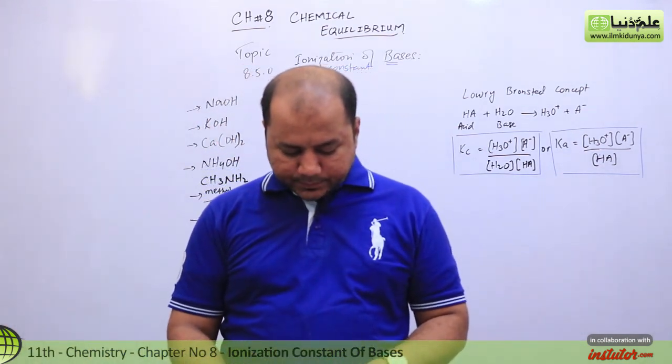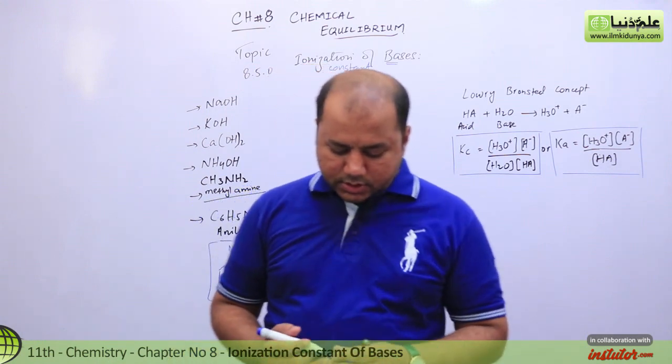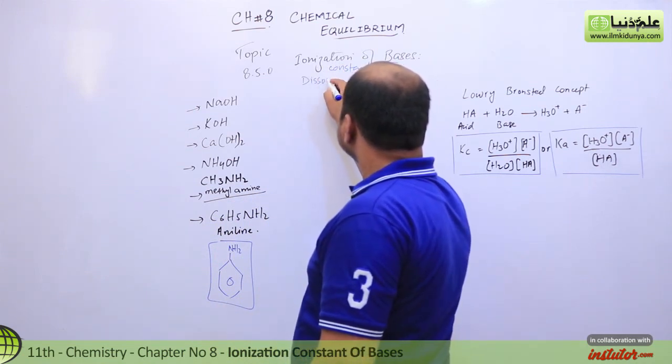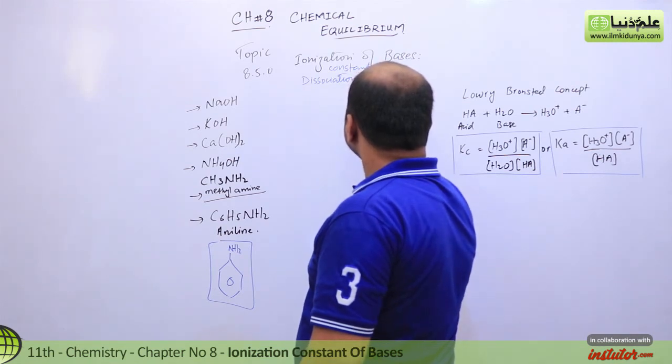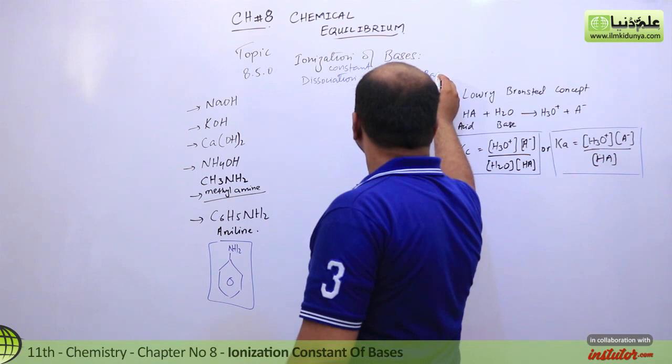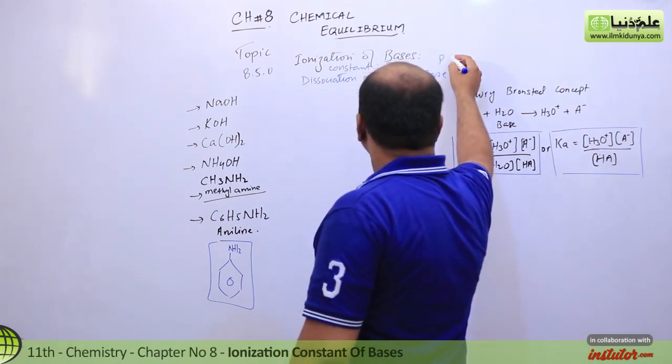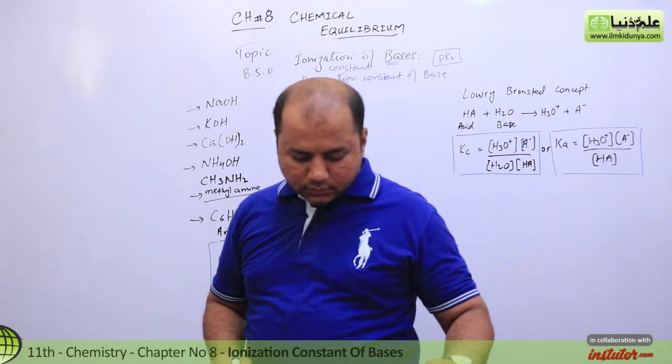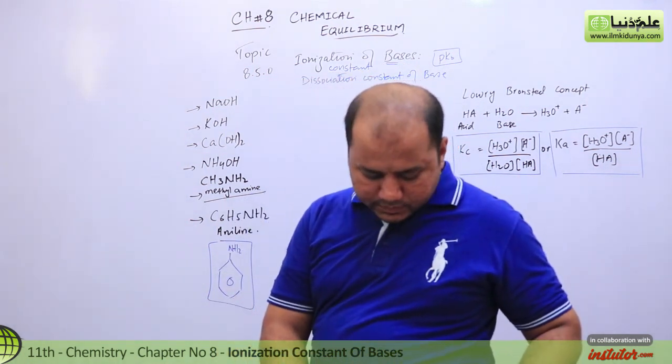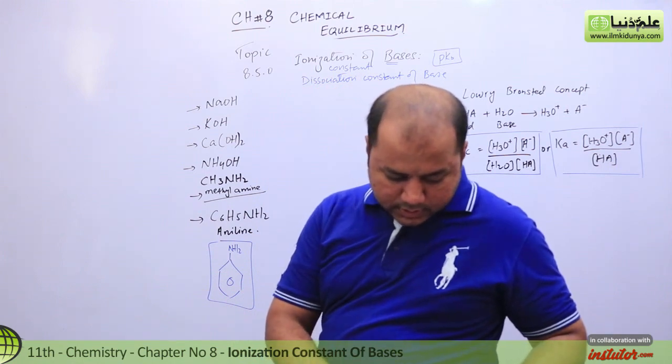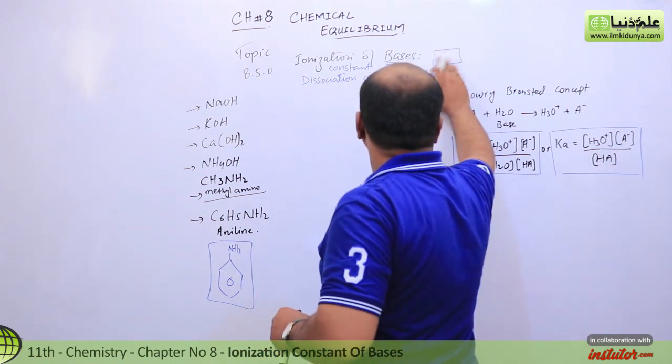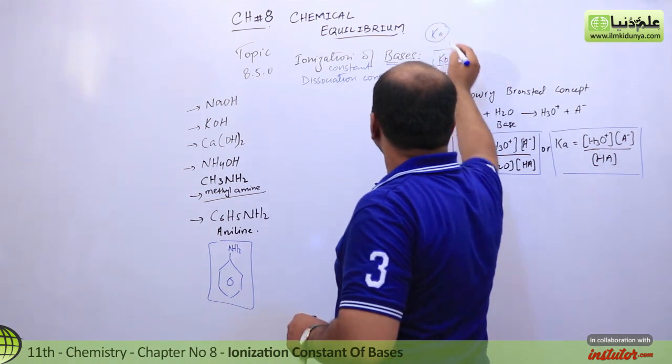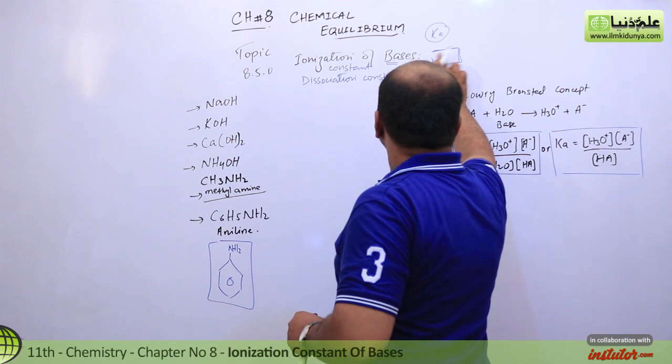In today's lecture I will talk about how you can determine the ionization constant of bases or dissociation constant of bases. You can use the name dissociation constant of bases, which is something like pKb. That's the dissociation constant for the bases, or you can just say it as Kb. That's the dissociation constant. For acids we wrote Ka, for bases we write Kb.